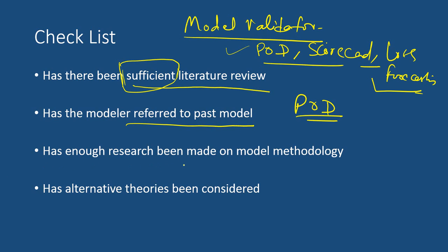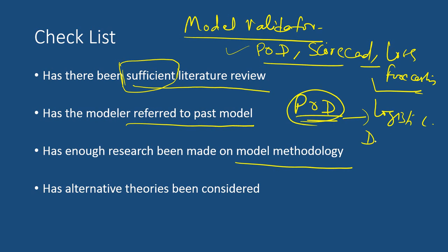The third checklist is whether enough research has been made on the model methodology. There are a number of methodologies for a particular model and there is no thumb rule as to which model is the best. For a POD model or scorecard, one can use logistic regression, a decision tree, or a neural network. The researcher has to find out which model works best for the particular data.